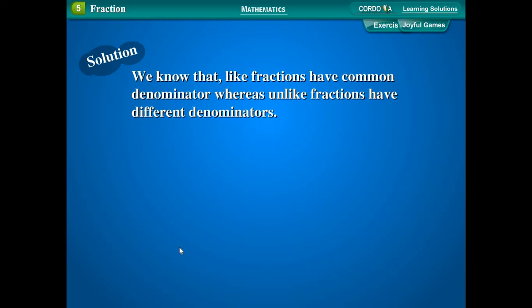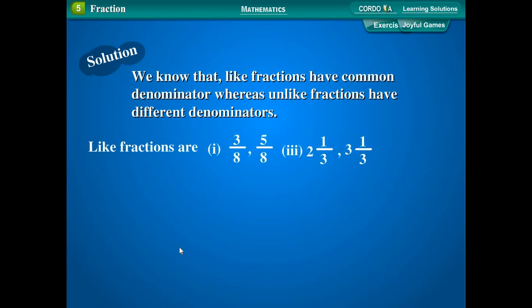Solution: We know that like fractions have a common denominator whereas unlike fractions have different denominators. Like fractions are: 3 upon 8 and 5 upon 8; 2 and 1 upon 3 and 3 and 1 upon 3; 6 upon 19 and 4 upon 19 — because they have a common denominator.